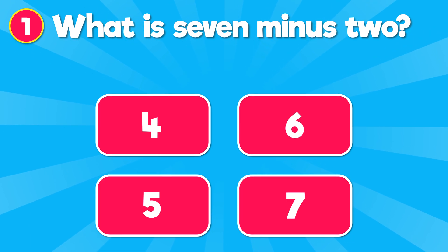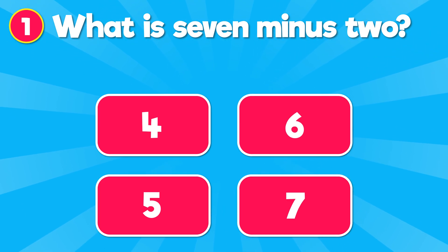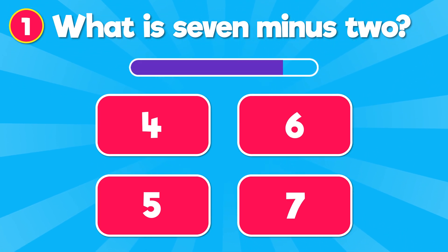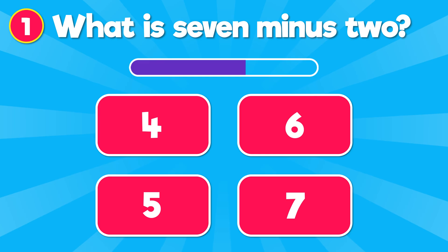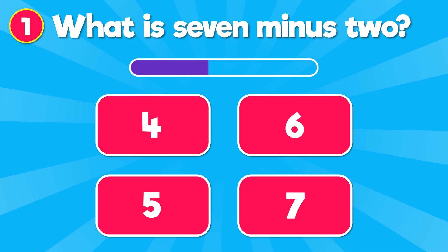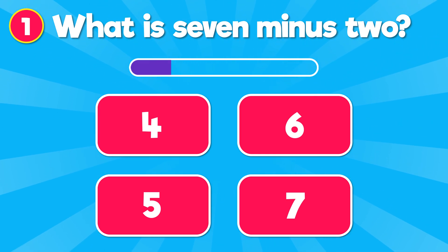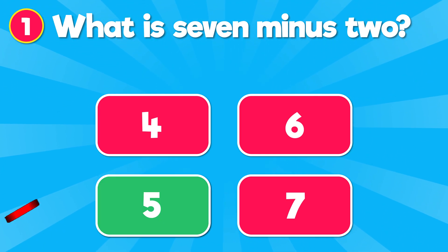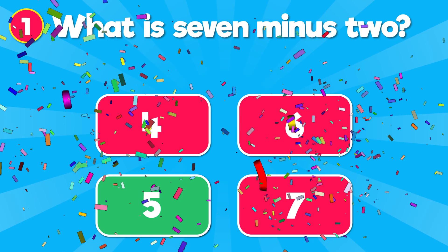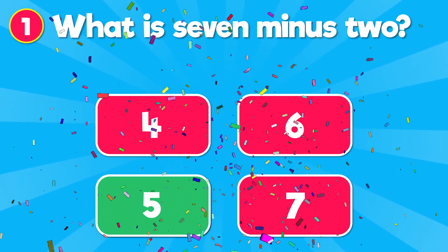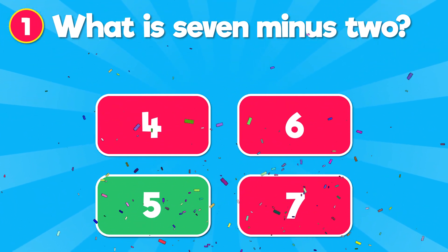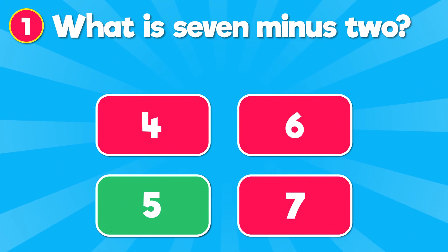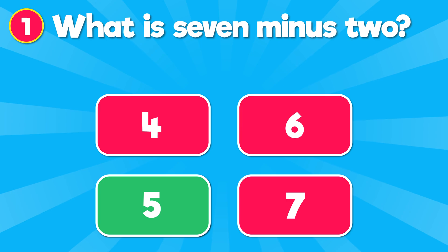What is 7 minus 2? The correct answer is 5. 7 minus 2 is 5.